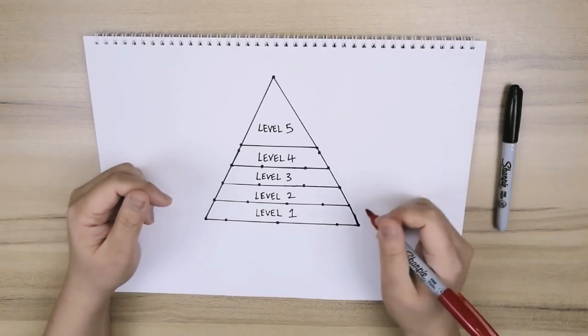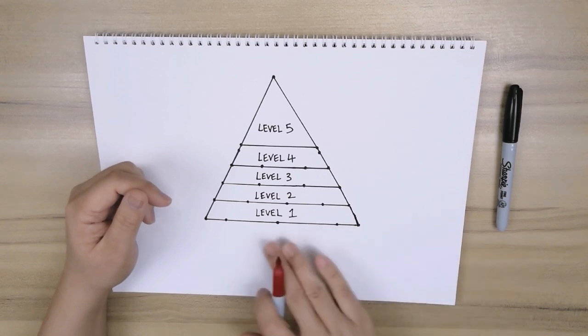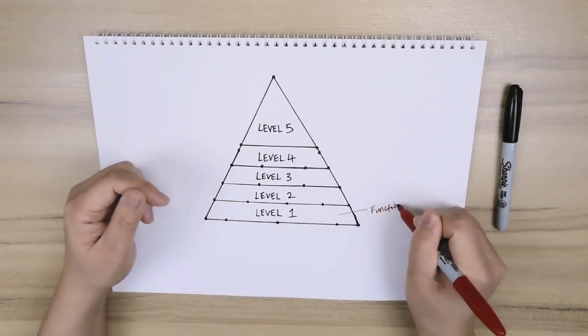For example, let's use a smartphone as a product to describe the five levels of experience. As you can see, the first level, which is the foundation of the hierarchy, is the functional experience.